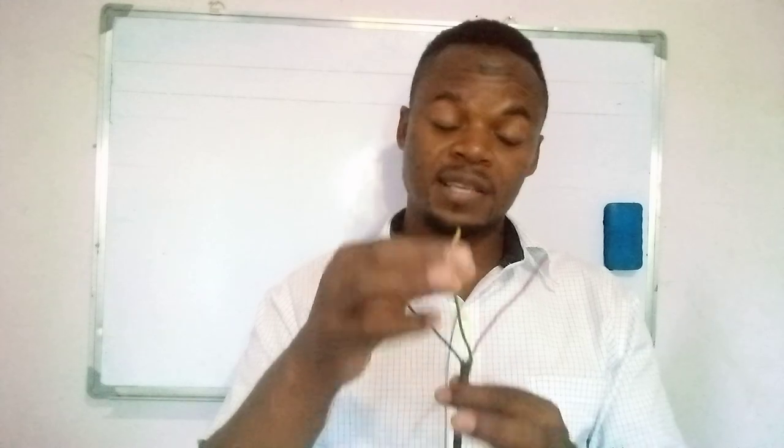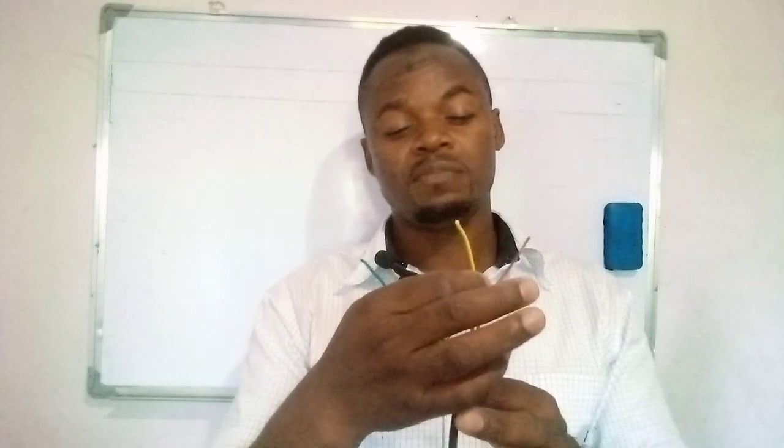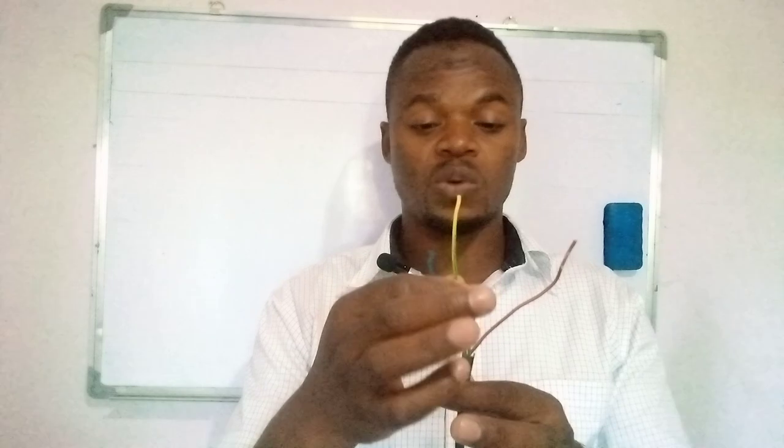So, these are the three wires. The earth wire is either green or yellow, but it has both colors. As you can see, this one has both yellow and green.